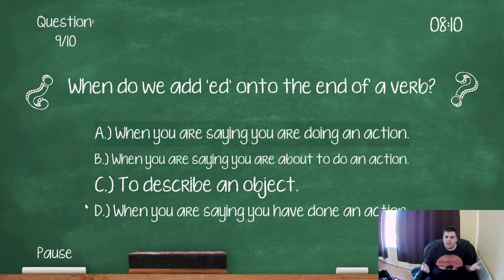When do we add ED onto the end of a verb? So when you are saying you are doing an action. When you are saying you are about to do an action. To describe an object. When you are saying you have done an action. So for example, if we take the word complete, which is a verb. You put ED completed. You are saying you've done an action.